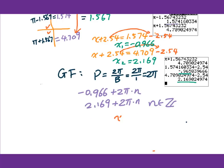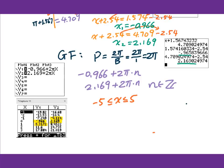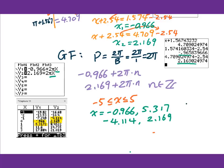We're looking for the angle between negative 5 to 5. We put this general form into the graphing calculator as y1 and y2. Remember, this n changes to x when you put it into the graphing calculator. Then check the table — you will get all values between negative 5 and 5. So x equals negative 0.966, 5.317, negative 4.114, and 2.169. We have 4 solutions for this equation.